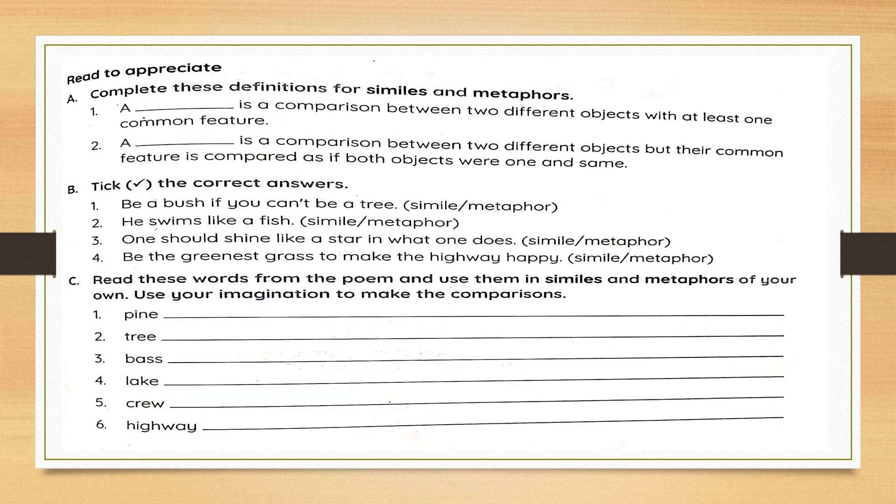Come to read and appreciate. Complete these definitions for similes and metaphors as discussed in our online classes, children, and in our previous video as well. A comparison between two different objects with at least one common feature is a simile. And the comparison between two different objects but their common feature is compared as if both are one and same, this is a metaphor. Now, based on this definition and understanding of similes and metaphor, here is a small exercise for you. Be a bush if you can't be a tree. Is this a metaphor or is this a simile? This is a metaphor. He swims like a fish. This is a simile. Rest two, do it on your own.